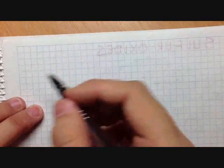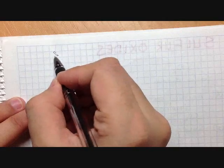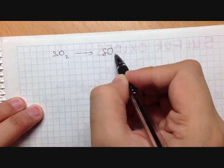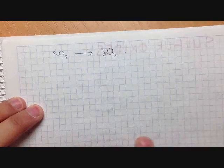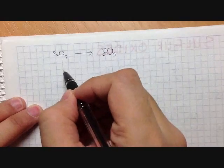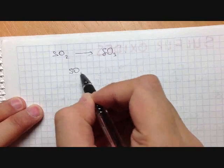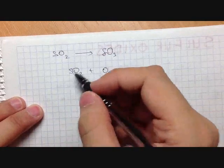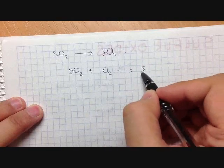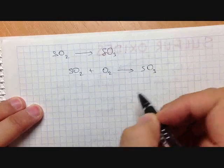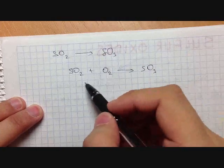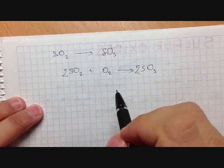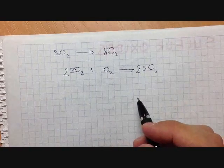We can also convert sulfur dioxide to sulfur trioxide by adding oxygen. The balanced equation uses a coefficient of 2 on both the SO₂ and SO₃ sides: 2SO₂ + O₂ → 2SO₃.